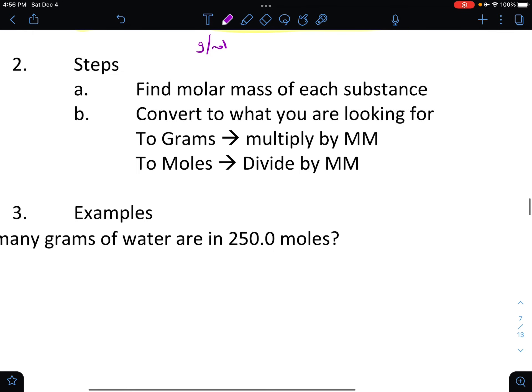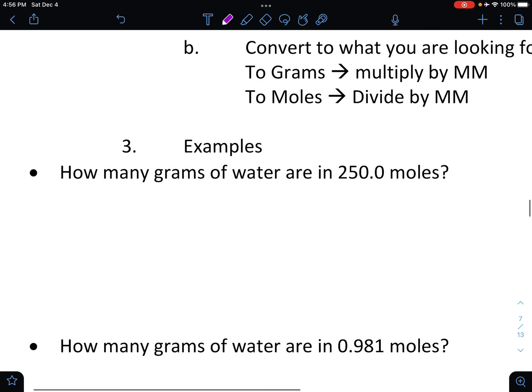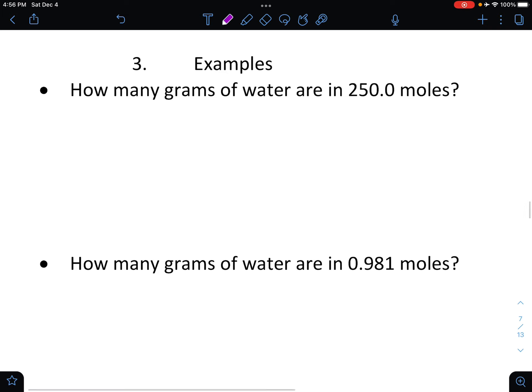Here we go looking at some stuff. We're going to find molar mass of each substance. That's what we're always going to start with on these, because we need to know those molar masses. Then we're going to convert to what we're looking for. If we're going to grams, we'll multiply by the molar mass. If we're going to moles, we'll divide by the molar mass. We know that because we're going to use unit canceling just like we did earlier with our unit analysis or dimensional analysis. You'll need your periodic table perhaps, but definitely a calculator here.